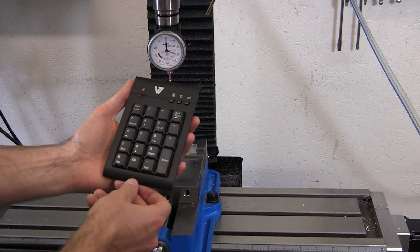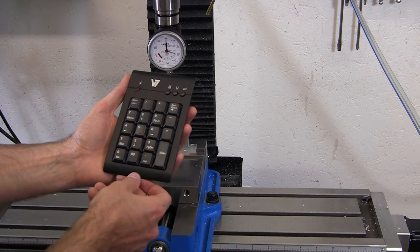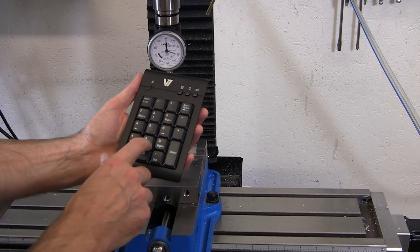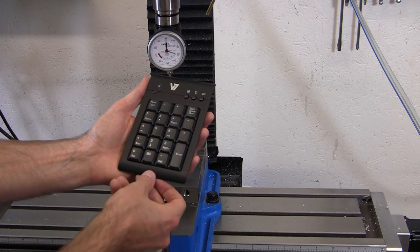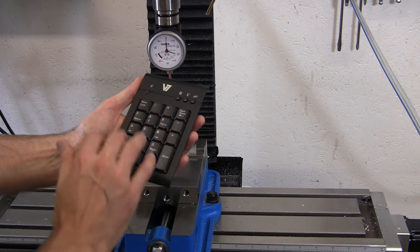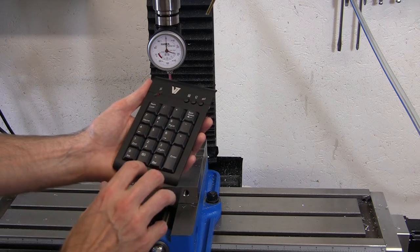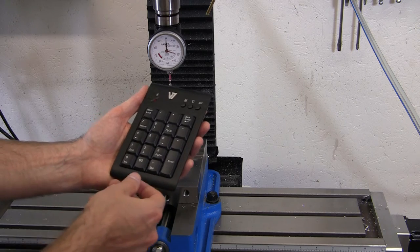The first control device that we'll look at is this numeric keypad. It's connected to the computer by USB and replicates several of the keys from the keyboard. It has standard Linux CNC configuration, and you don't have any way on here to change the jog rate. You have to go back to the keyboard in order to change it.